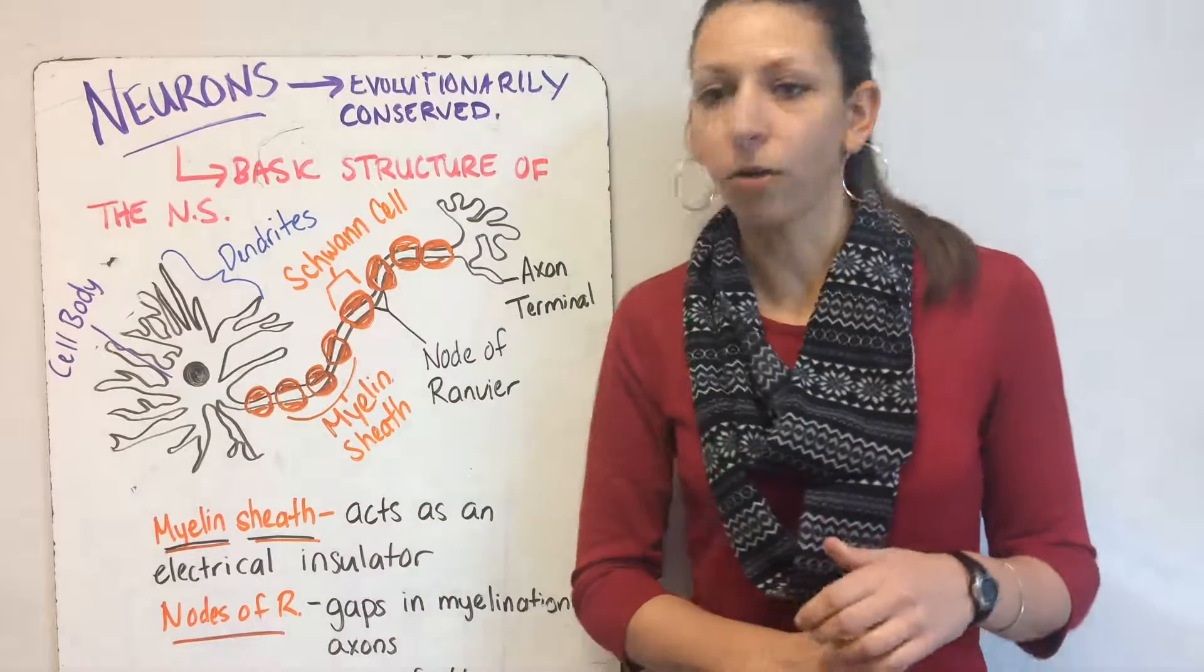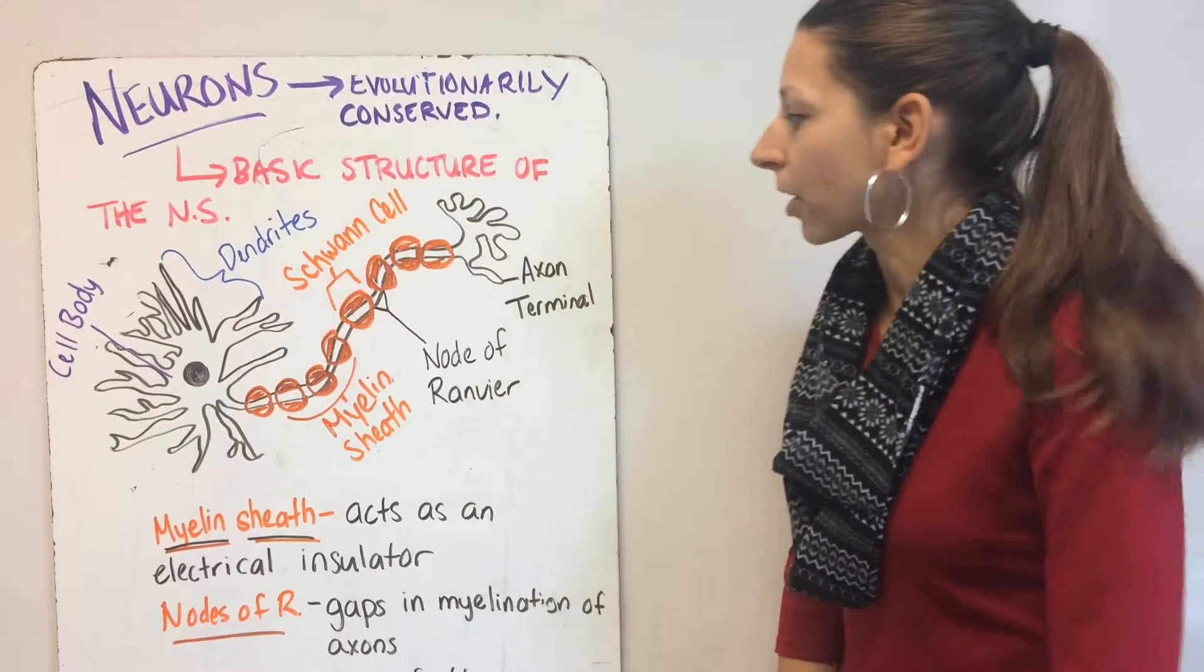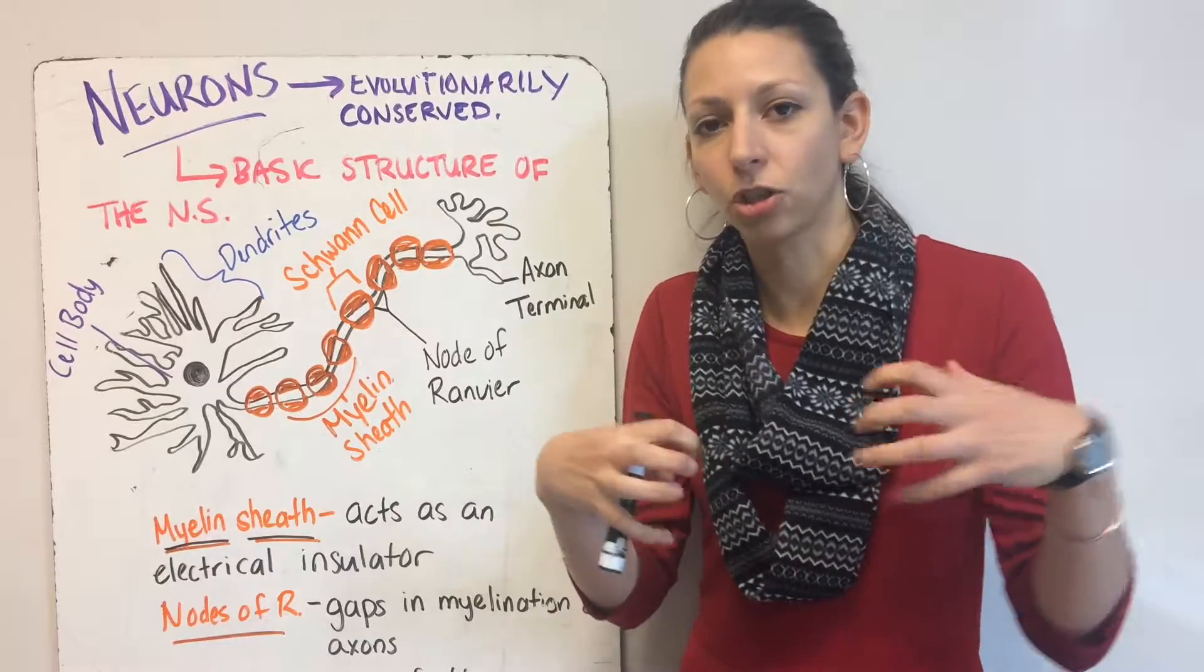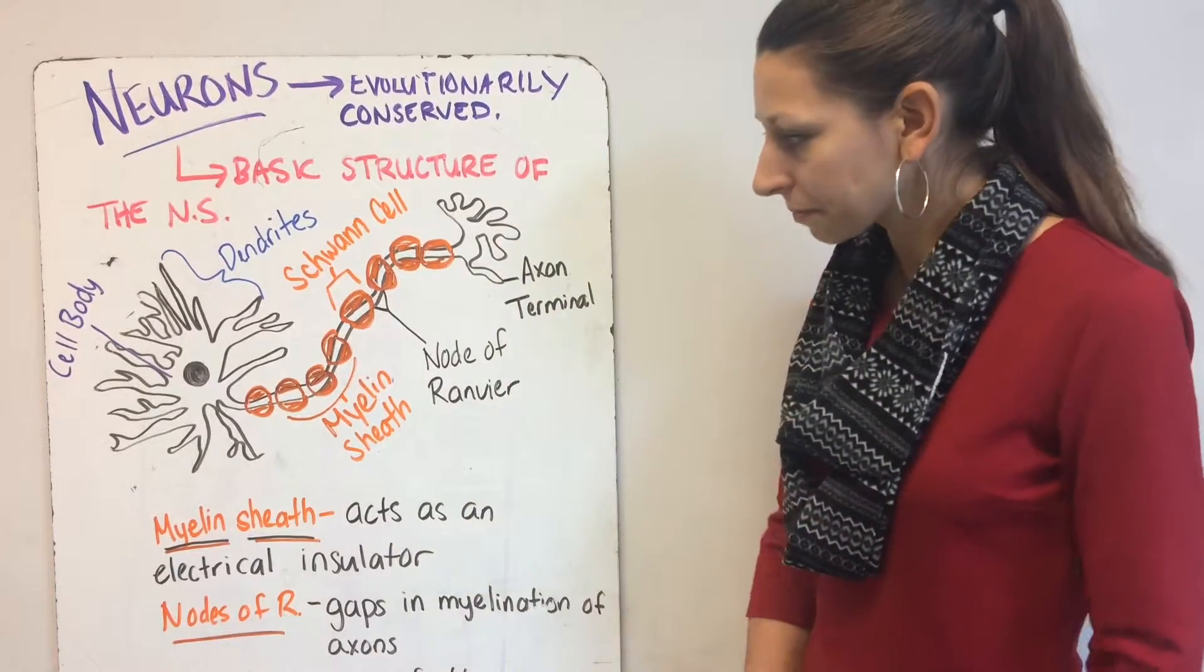Our axon terminal is where the signal leaves, and our nodes of Ranvier are where we are not covered by our myelin sheath, not surrounded by Schwann cells.